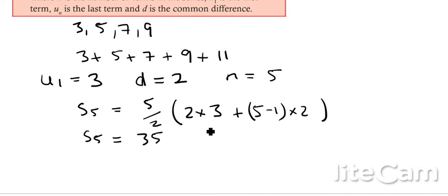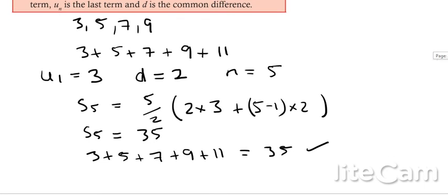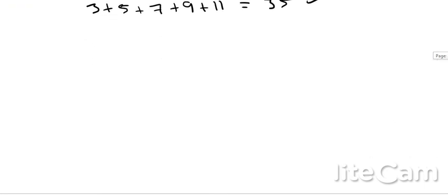Now I can check if that's correct by actually adding up the first five terms. If I actually did 3 plus 5 plus 7 plus 9 plus 11, yep, I do get 35. So there we go, that is how to find the sum of an arithmetic series.